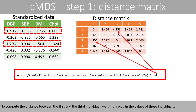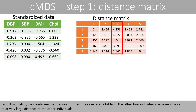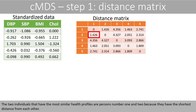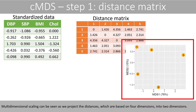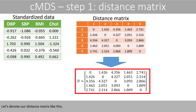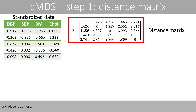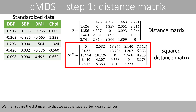To compute the distance between the first and third individual, we simply plug in the values of these individuals. From this matrix, we clearly see that person number 3 deviates a lot from the other four individuals because it has a relatively large distance to the others. The two individuals with the most similar health profiles are persons number 1 and 2, because they have the shortest distance from each other. Multidimensional scaling can be seen as projecting distances based on four dimensions into two dimensions. We then square the distances to get the squared Euclidean distances.